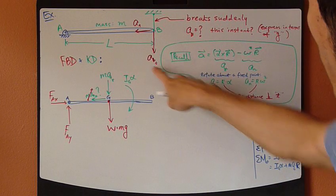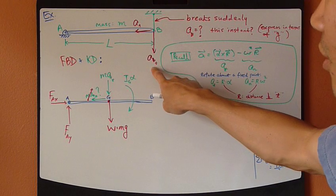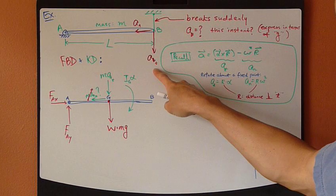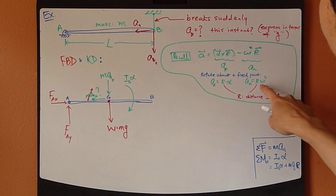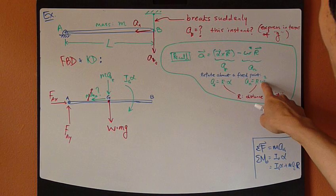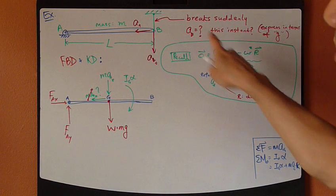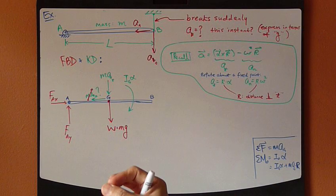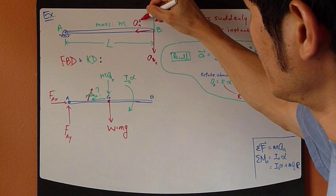But tangent component is defined as r alpha, so that has a value. Normal component is r omega squared. Now, it's a function of velocity alone. But at this very instant, velocity is zero.